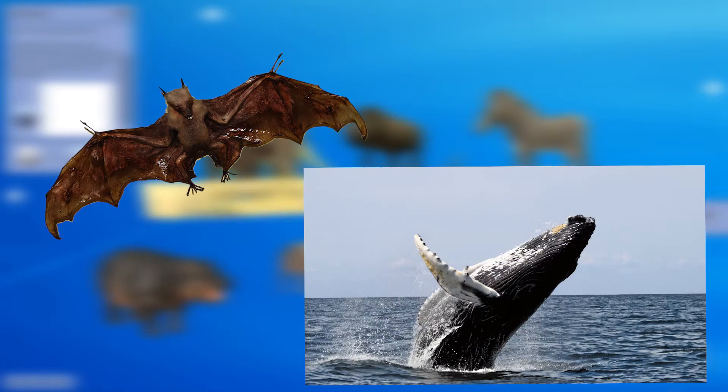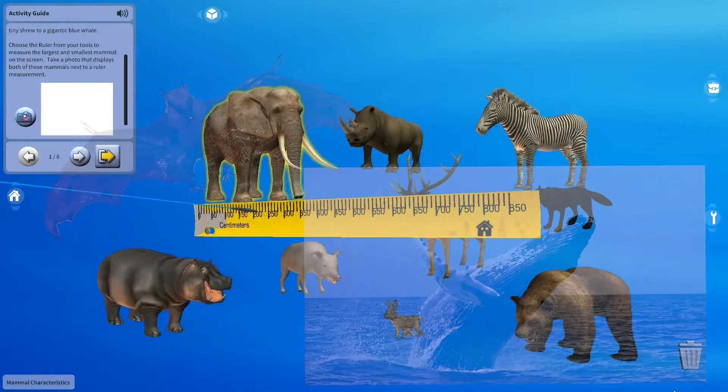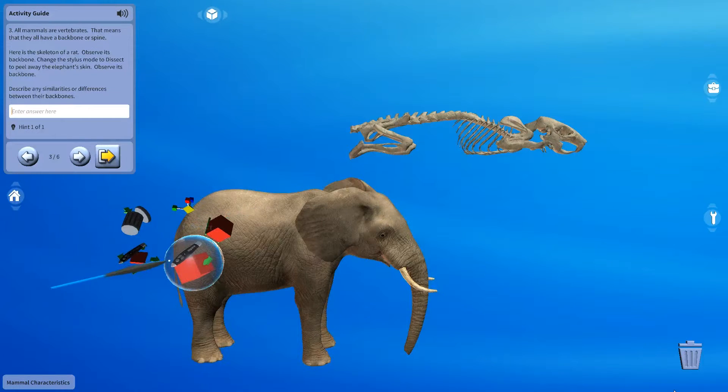And what do a bat and whale have in common? Nothing. Both of them are mammals. So are we! That's right.